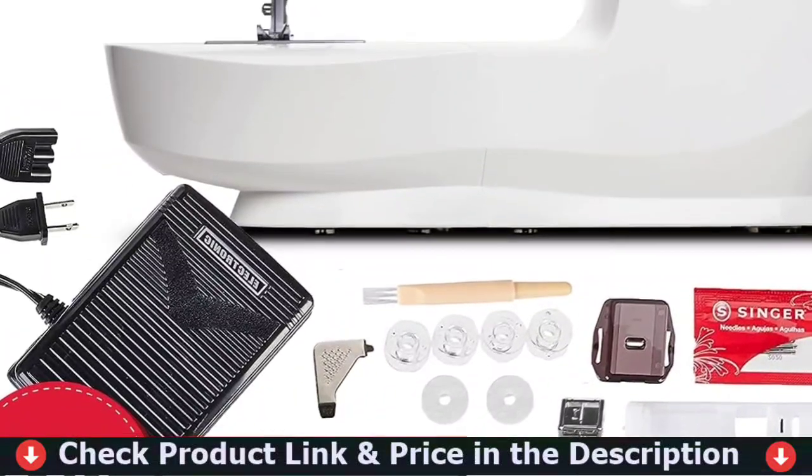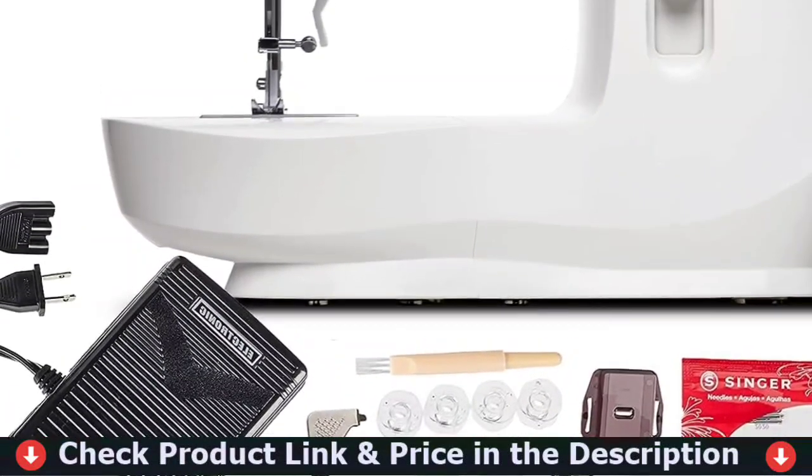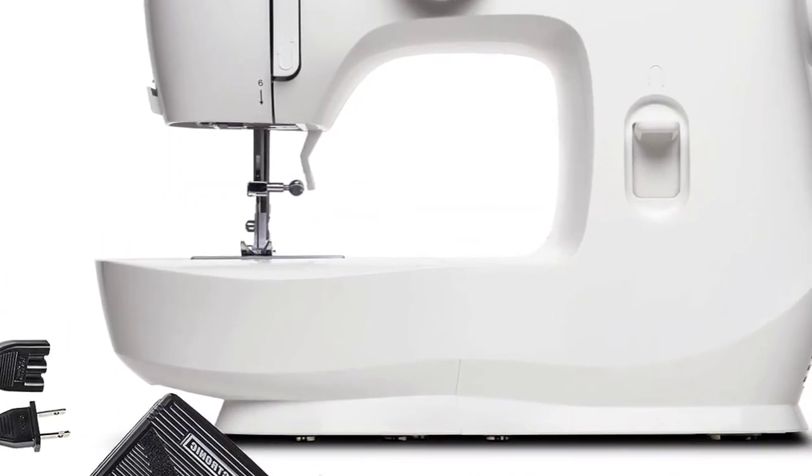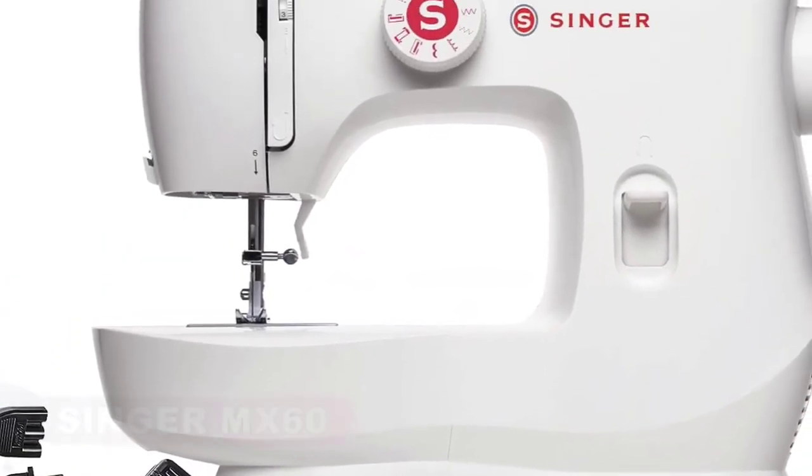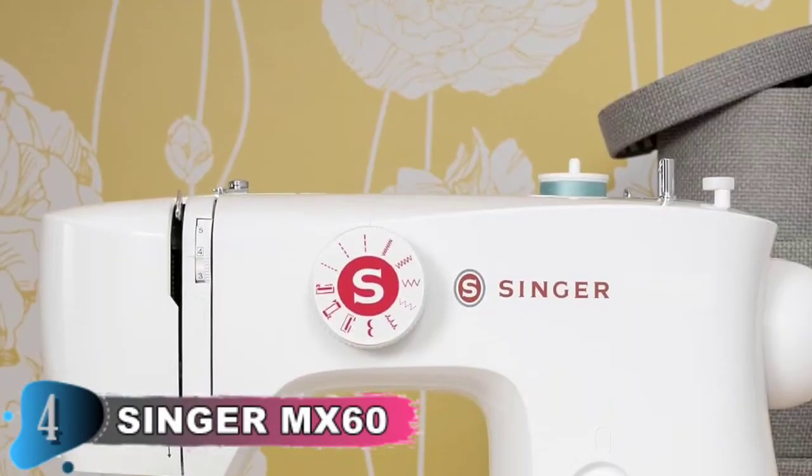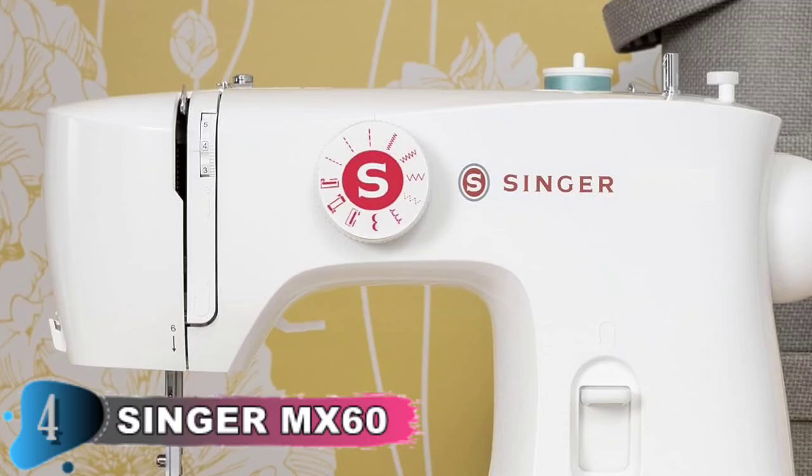Sew fashions, piece quilts, create crafts or do simple mending, you can do it all. Buttonholes are sewn in four easy steps, clearly displayed on the stitch selector dial. Depending on your fabric and thread selection, the thread tension dial can be used to fine-tune the look of your stitch as desired.